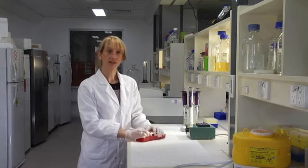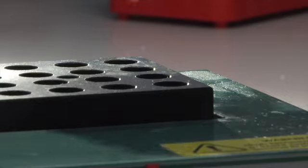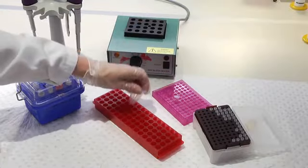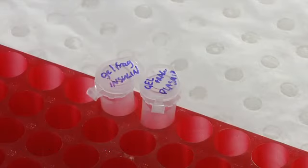Now we've cut our fragments out of the gel, we just need to melt the pieces. Now that they've melted, we just need to mix the digested plasmid and insert together.